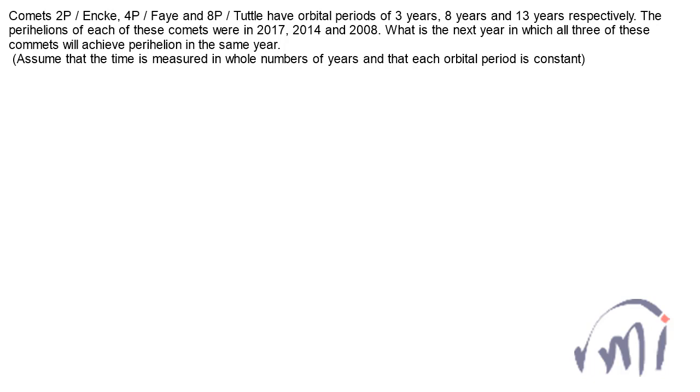The perihelion of each of these comets were in 2017, 2014, and 2008. What is the next year in which all three of these comets will achieve perihelion in the same year? We can assume that time is measured in whole numbers of years and each orbital period is constant.